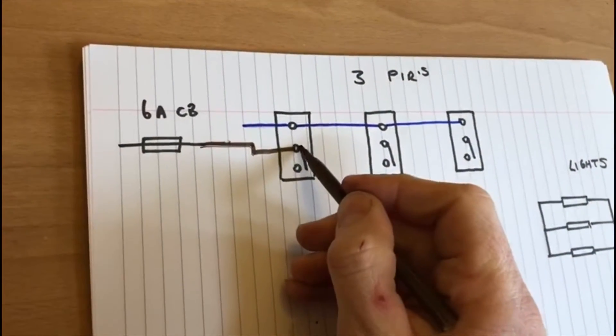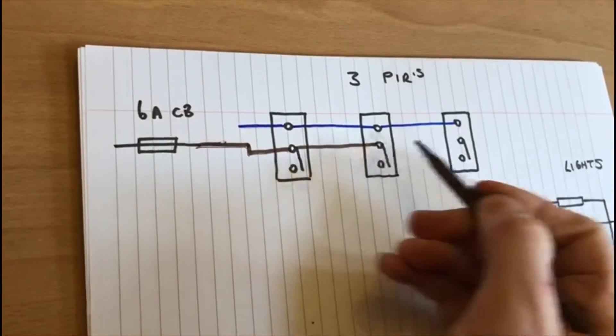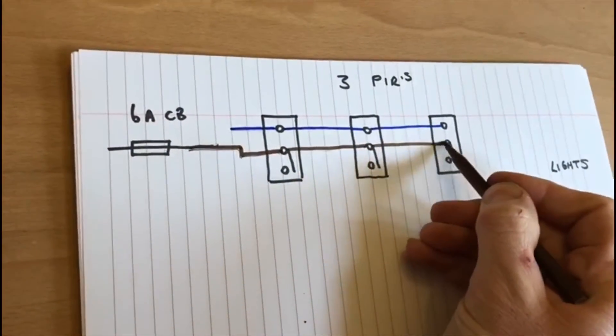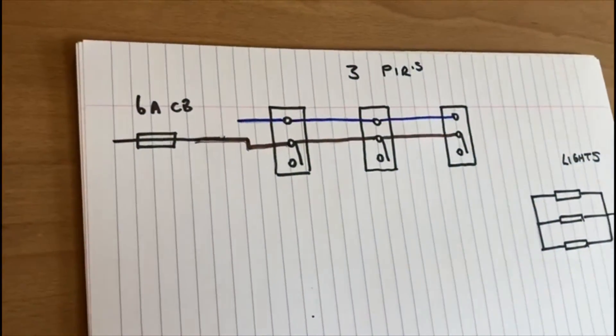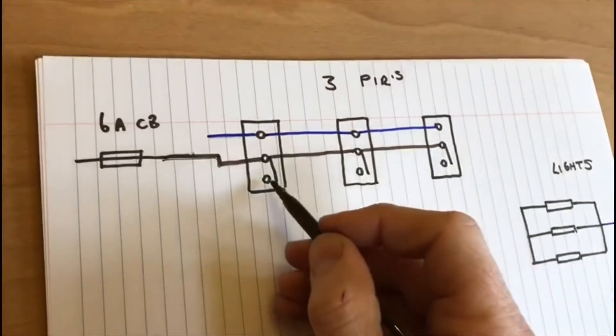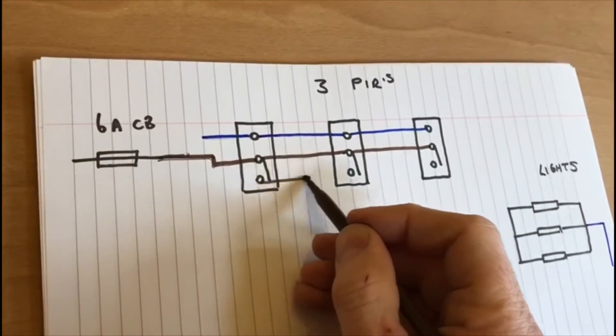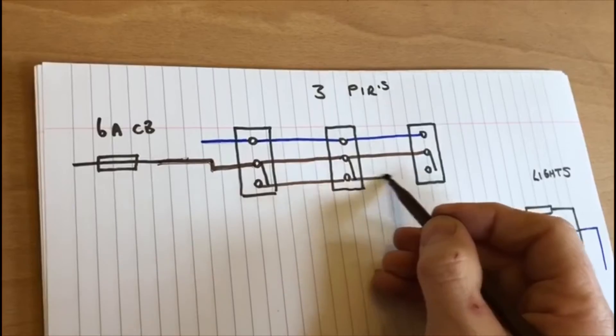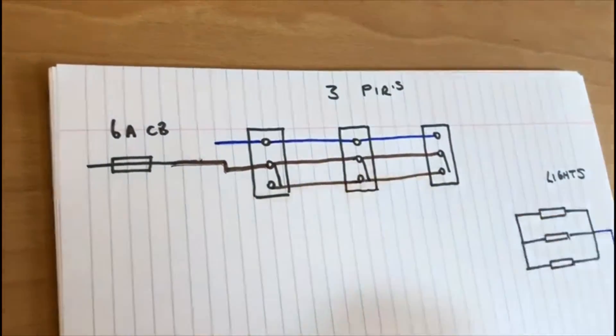It's quite simple. We just take the live supply to the first PIR and this is simply connected across, just like so.